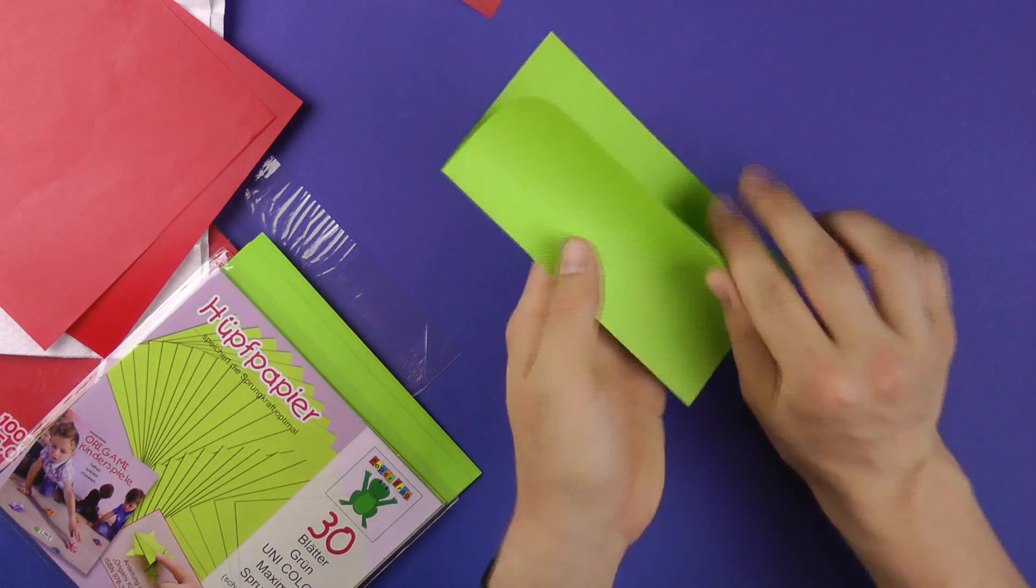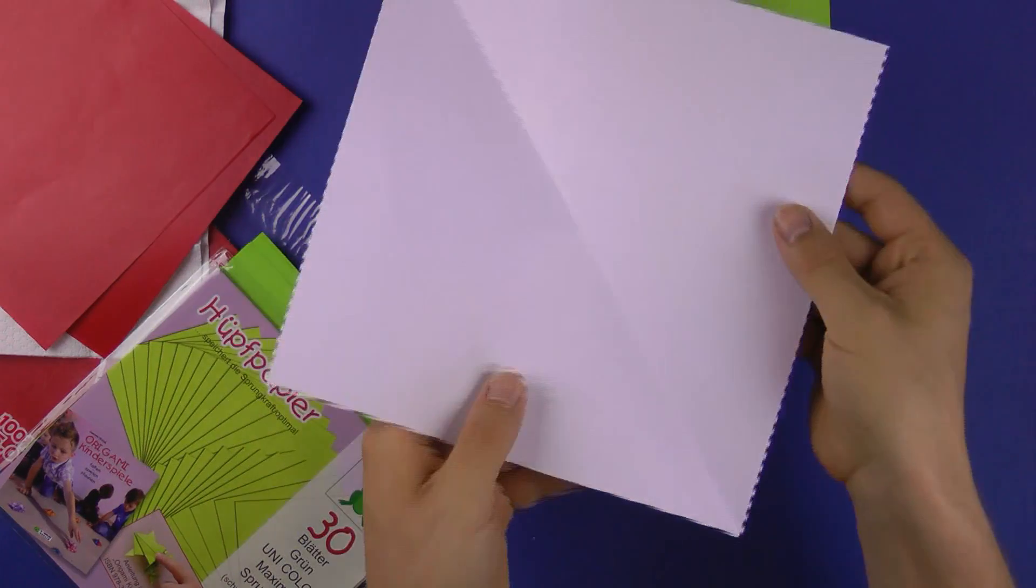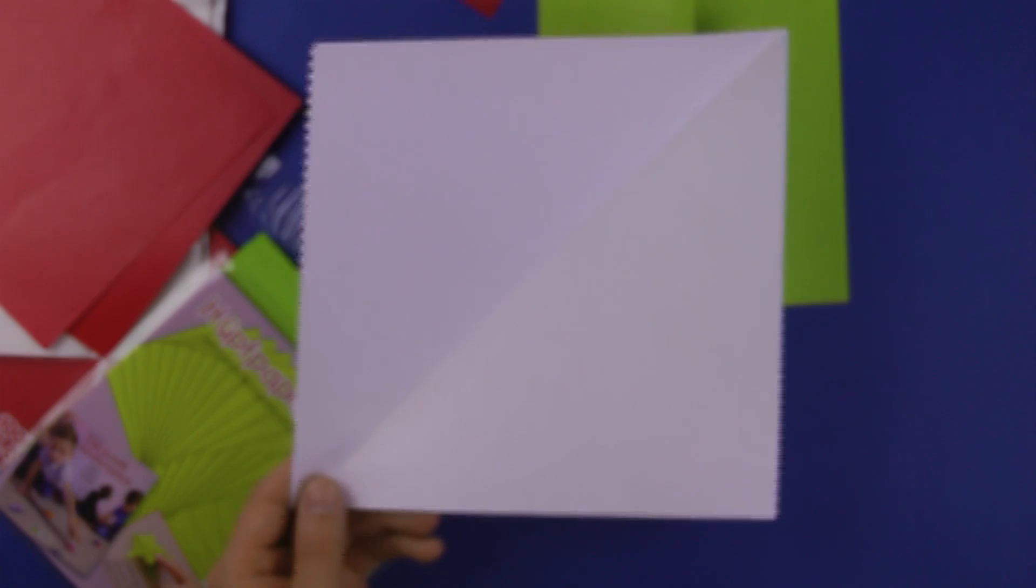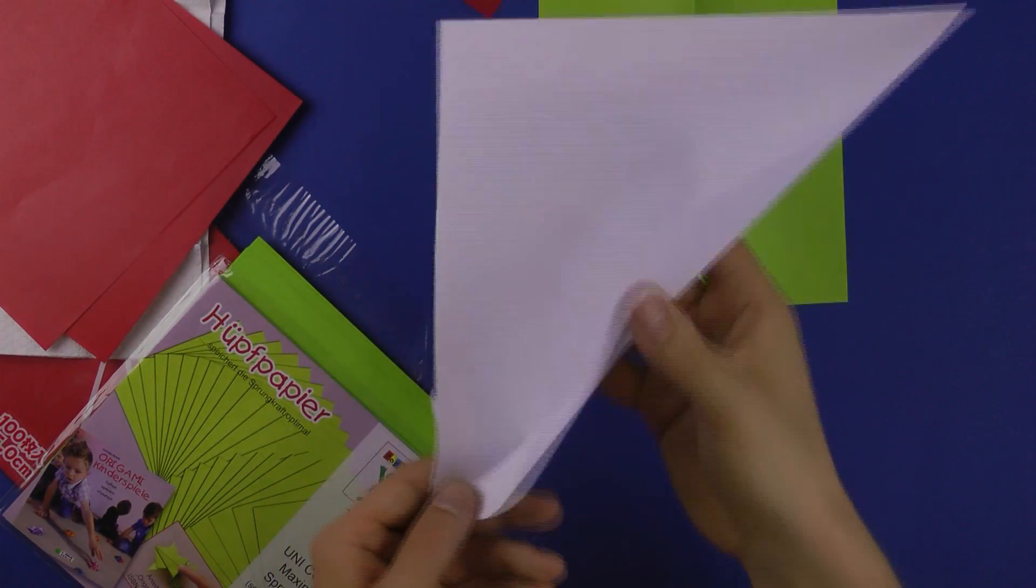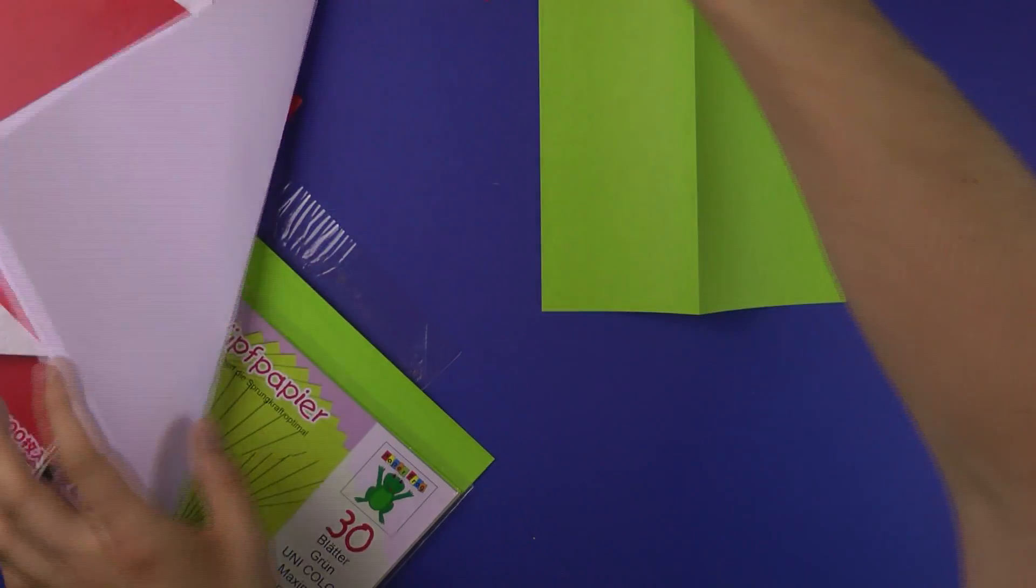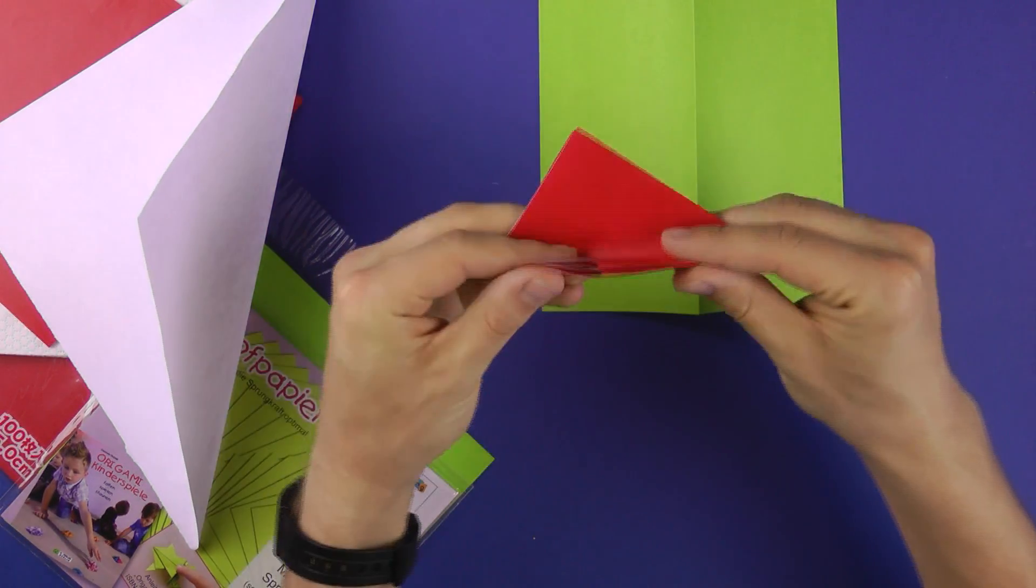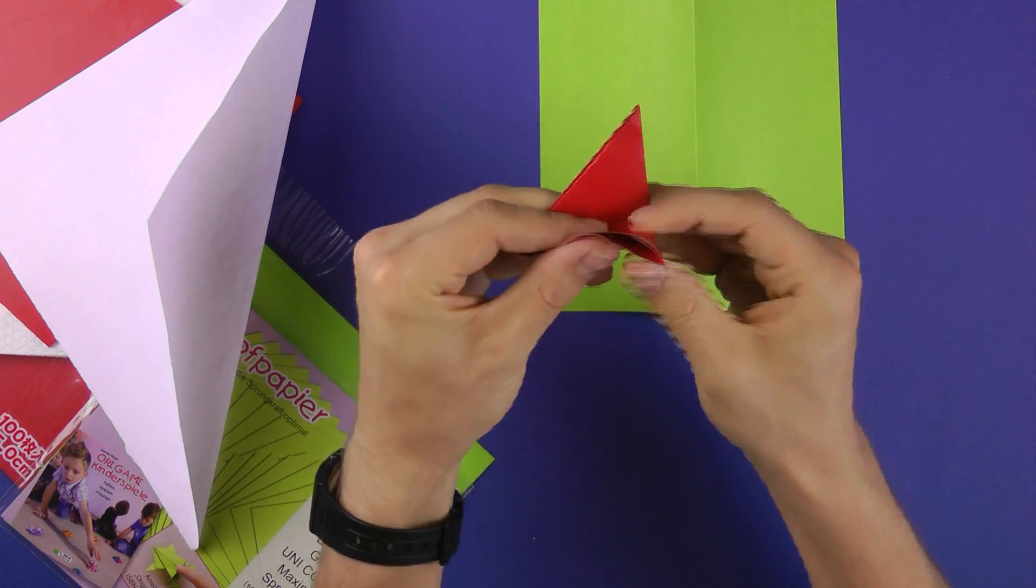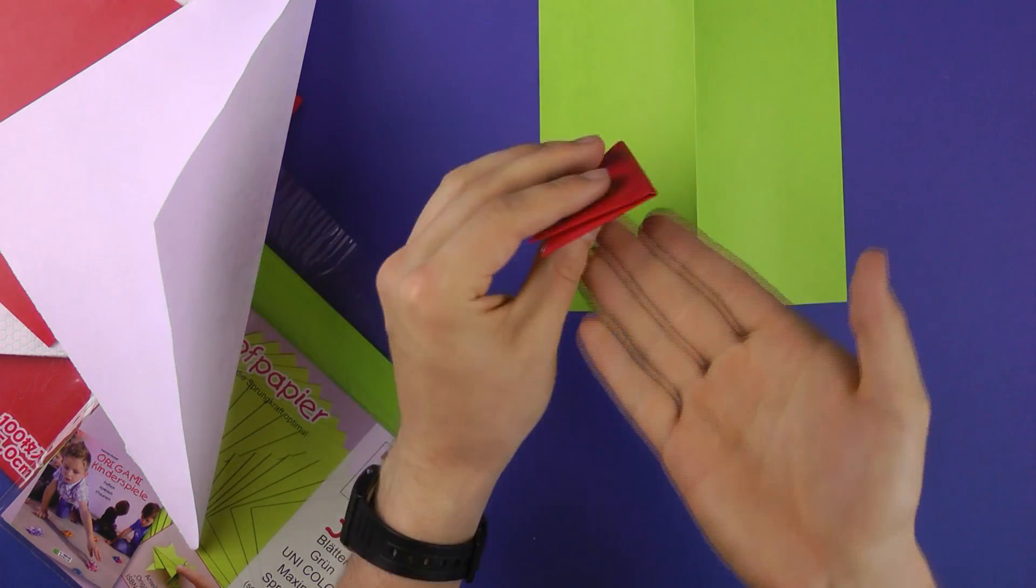So how do you choose between all of them? I think for learning a new model and just trying out if it's not too complicated you can use this one. Because the rule is the more layers you have to fold on top of each other, the more creases you want to make on the same spot, the thinner the paper needs to be because the layers add up obviously.